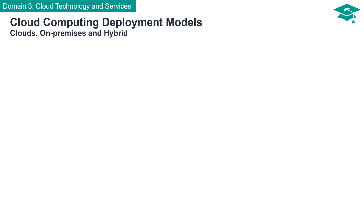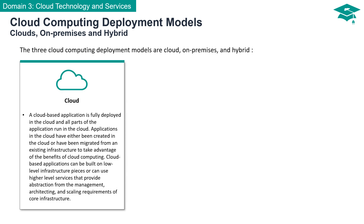In the realm of cloud computing, various deployment models offer unique solutions for diverse business needs. Let's explore the three primary models — Cloud, On-Premises, and Hybrid. In cloud-based deployment, the entirety of the application is housed and operates in the cloud. These applications leverage cloud computing benefits and can be constructed using low-level infrastructure components or higher-level services, abstracting away the complexities of managing, architecting, and scaling core infrastructure.